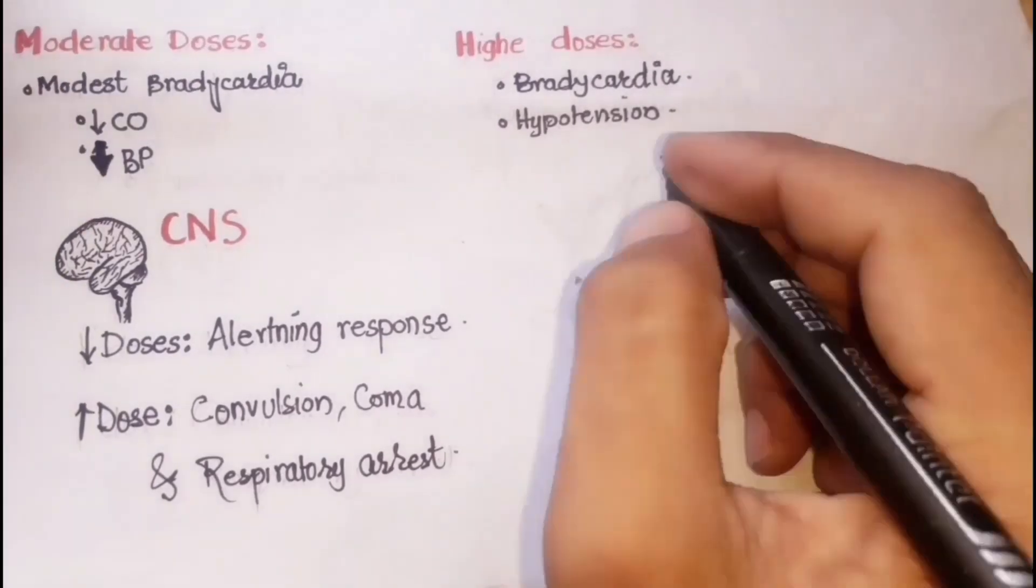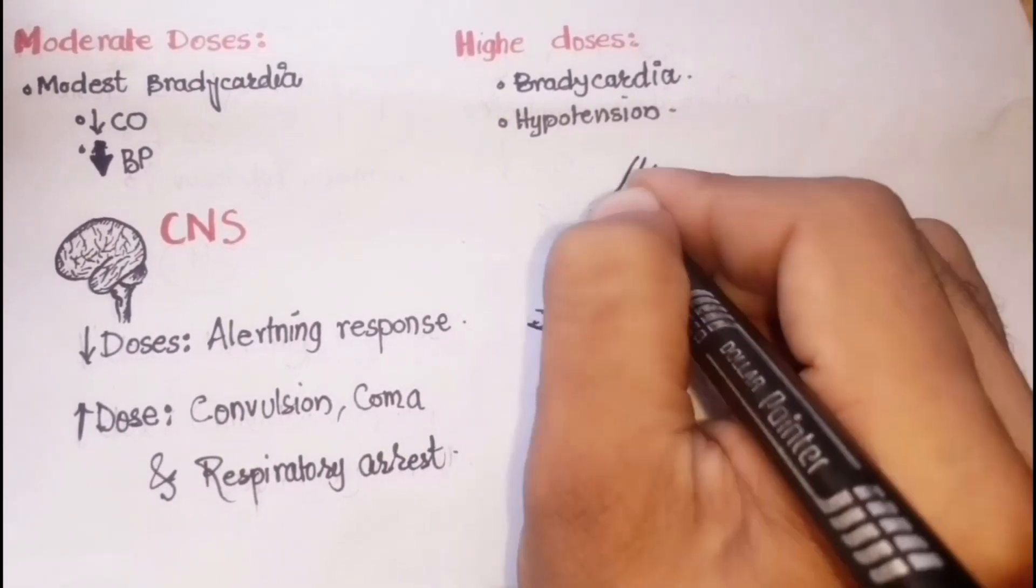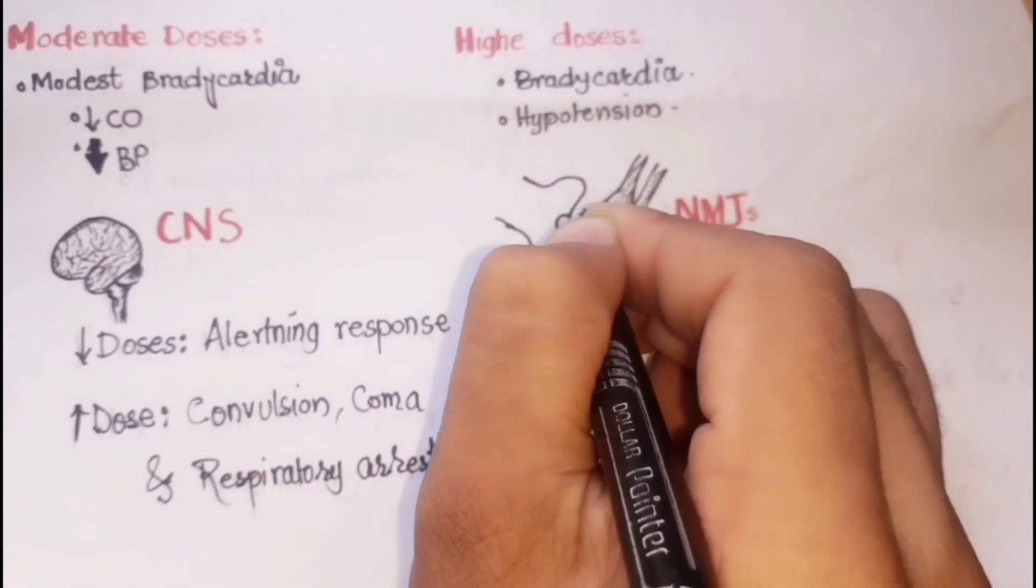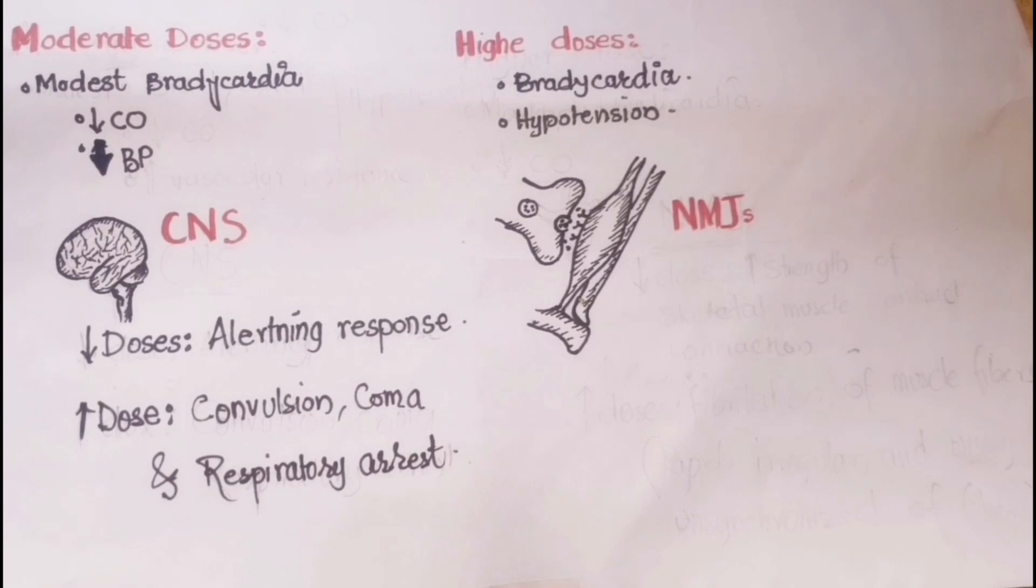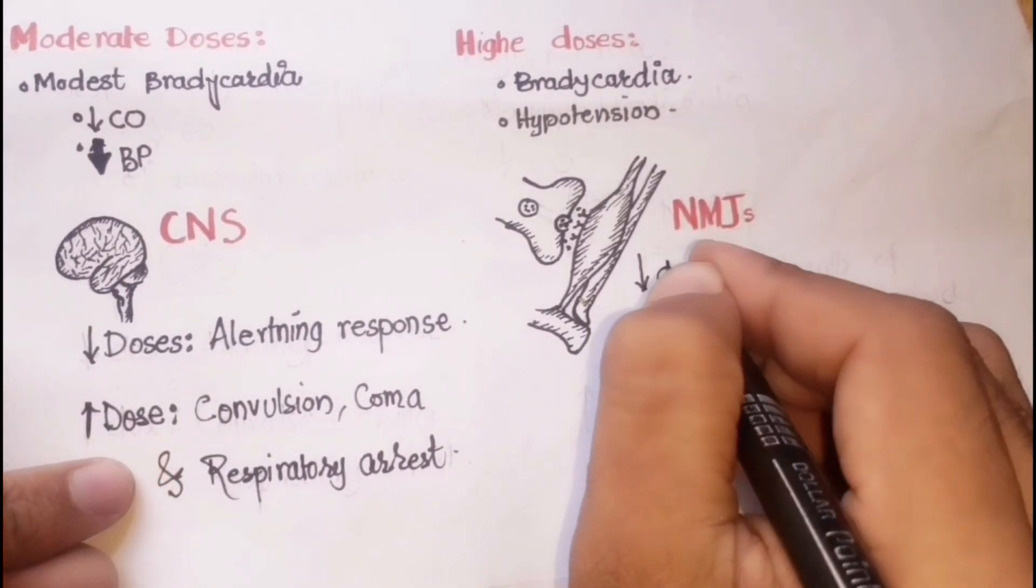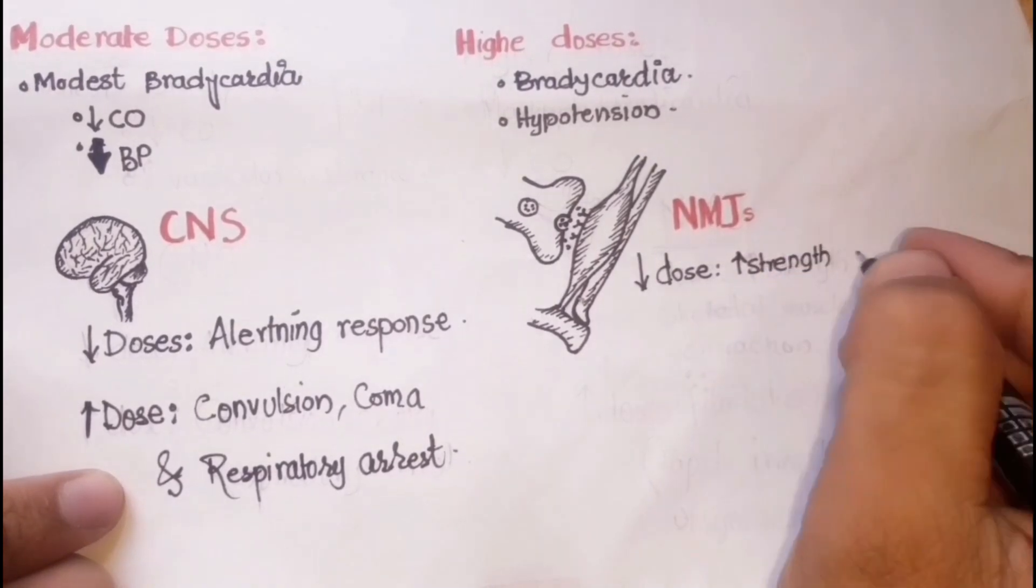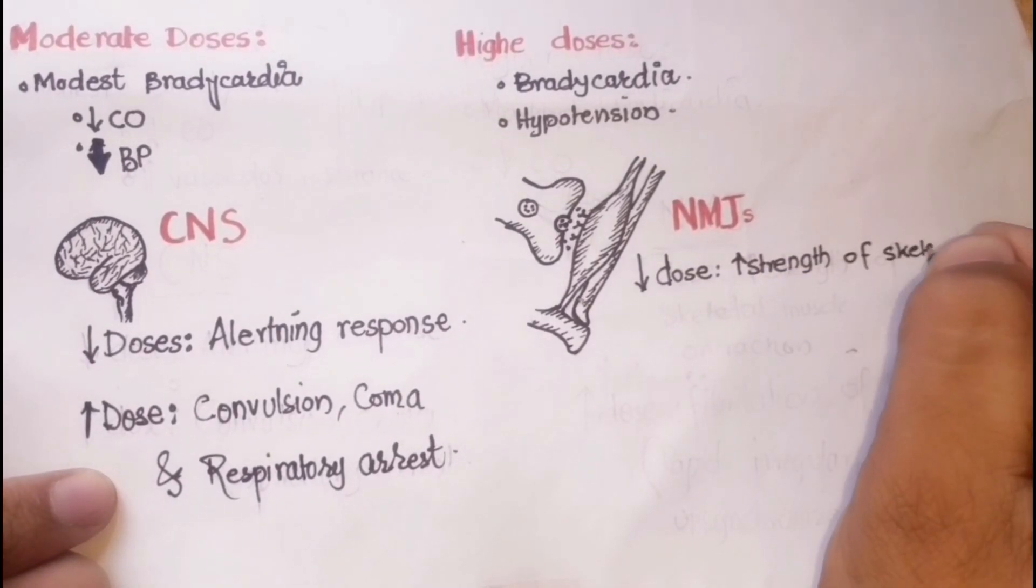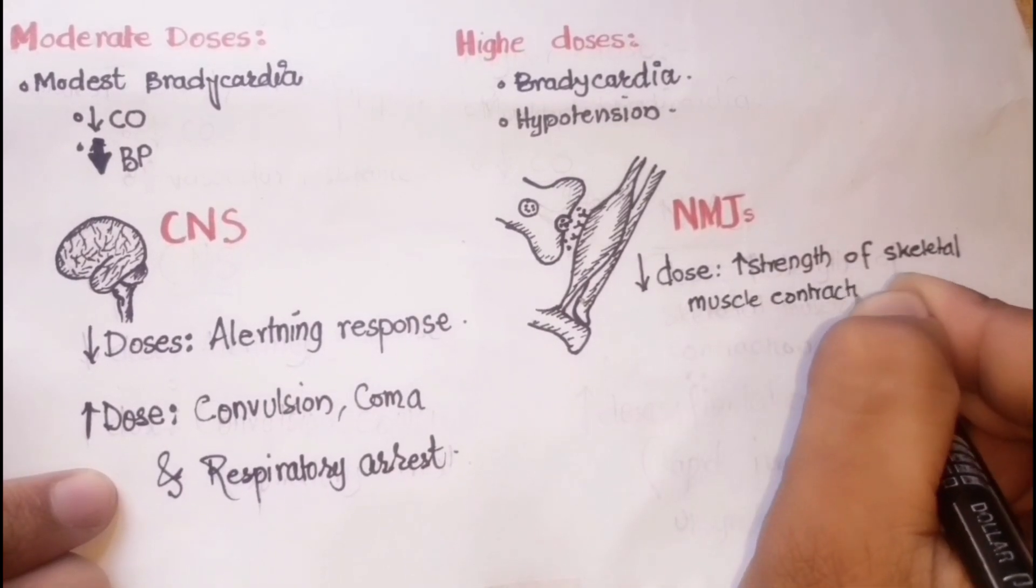Then we have to discuss the effects of anticholinesterases on the neuromuscular junctions. These effects vary based on the doses. For example, at lower therapeutic concentrations, these agents increase the strength of muscle contraction, especially muscles weakened by myasthenia gravis.